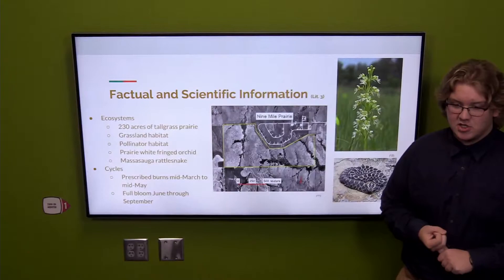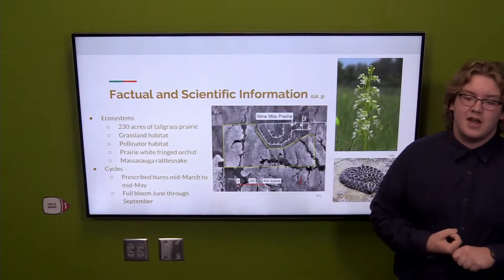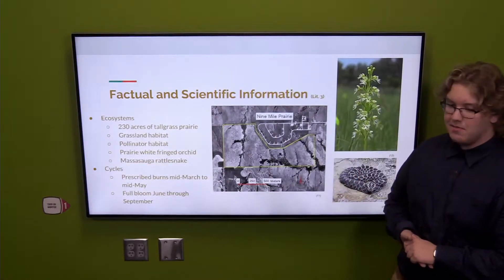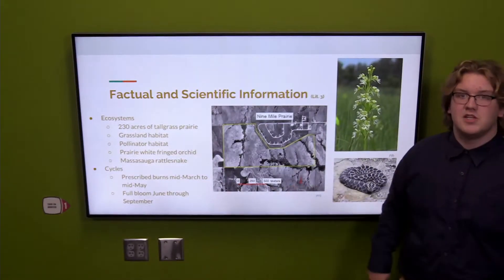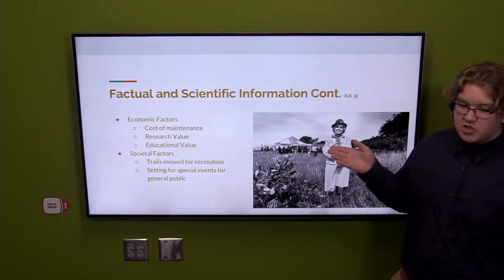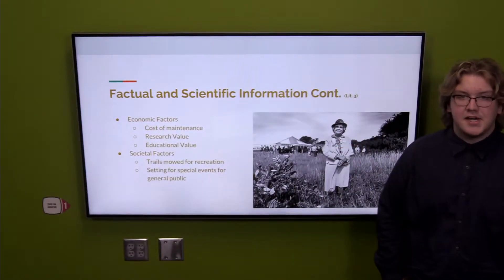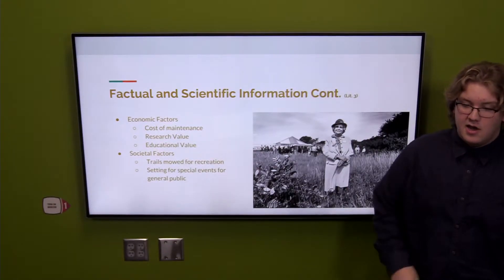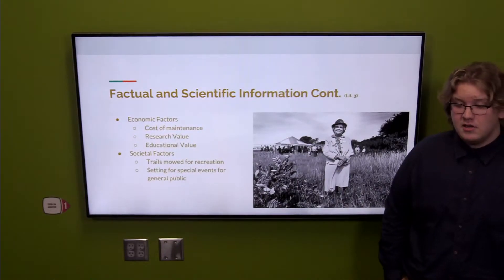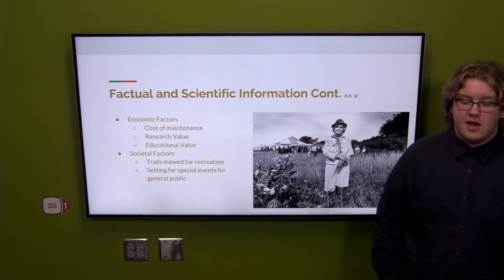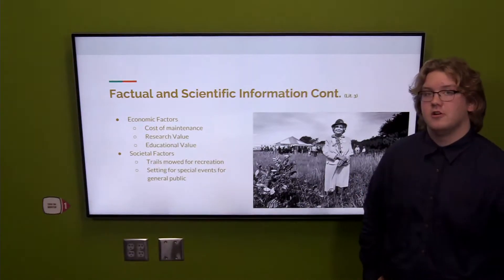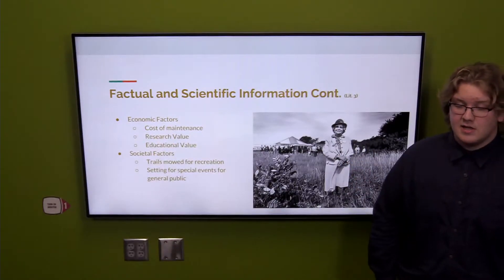Nine Mile Prairie is home to multiple endangered species like the white-fringed orchid and the massasauga rattlesnake, and over 80 species of birds. The prairie is in full bloom June through September and goes dormant in winter, although some plant species maintain their structure throughout the year. It was initially purchased by the University of Nebraska Foundation in 1983 with a donation from Miss Margaret Hall. It's one of the largest tracts of tall grass prairie left in the Midwest, serving as a nationally important laboratory for grassland study, and is also a seed source for local genotypes for prairie restoration efforts — which is very important for our goal on East Campus.